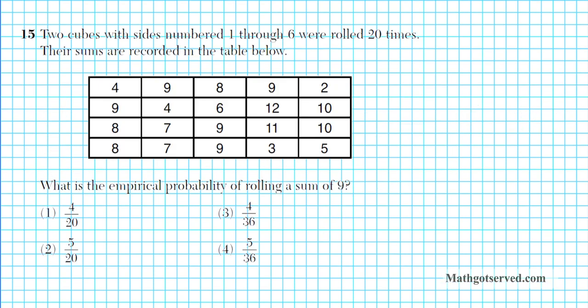For 15, we have a probability problem. It says, 2 cubes with sides numbered 1 through 6 were rolled 20 times. The sums are recorded in the table below. What is the empirical probability of rolling a sum of 9? Now the sums have already been computed for us. These are all the sums that were generated.